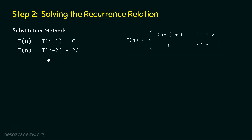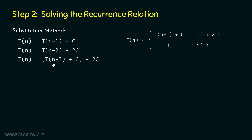In the same way, we can substitute T(n−2) by T(n−3) + c. This gives T(n) = T(n−3) + c + 2c = T(n−3) + 3c. Here we can observe a pattern: in the first iteration T(n) = T(n−1) + c, then T(n) = T(n−2) + 2c, then T(n) = T(n−3) + 3c.